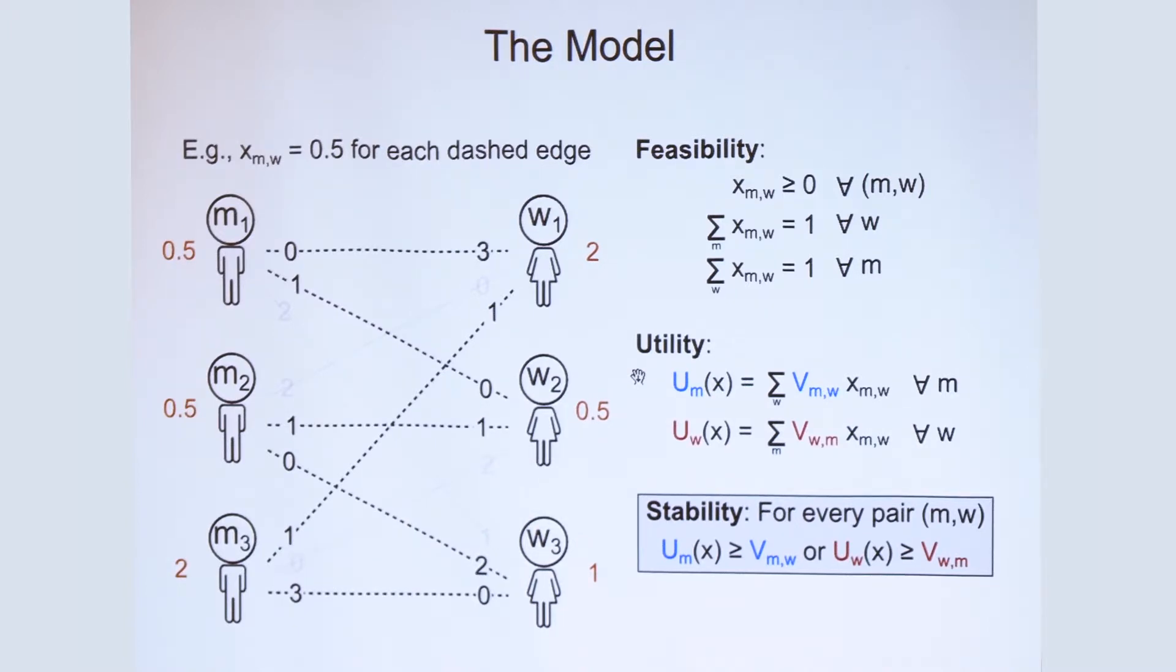And it's easy to see that the matching shown here is actually not stable because for the pair M to W2, both of these agents fall below their respective utility thresholds.